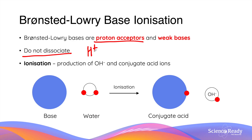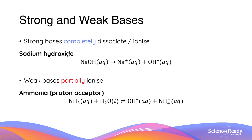Through ionization, Bronsted-Lowry bases are also able to produce hydroxide ions. However, it is important to note that the production of hydroxide ions in the ionization of a Bronsted-Lowry base is not due to the base itself, but rather the water. The base receives a proton from the water, resulting in the formation of a hydroxide ion and a conjugate acid. Strength of bases is determined in the same way as acids. Strong bases completely dissociate or ionize, whereas weak bases partially dissociate or ionize. A good rule to remember is that all Bronsted-Lowry bases partially ionize and thus are weak in nature.